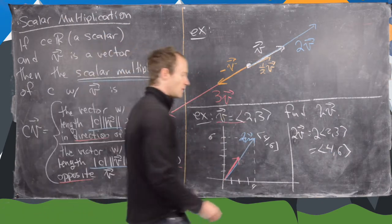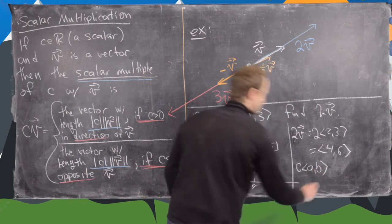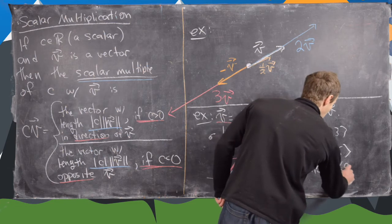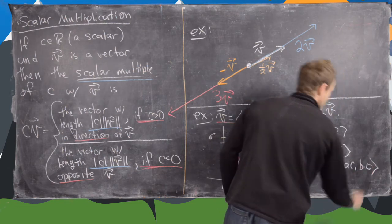But notice that's the same thing as multiplying each component by 2. So notice here we get 2 times v equals the scalar multiple 2 with (2, 3) equals (4, 6). So in general, we could have c times the vector (a, b) will be equal to (ca, cb).